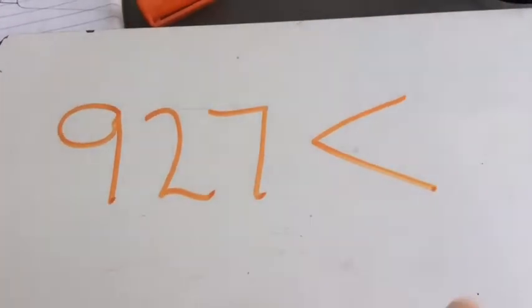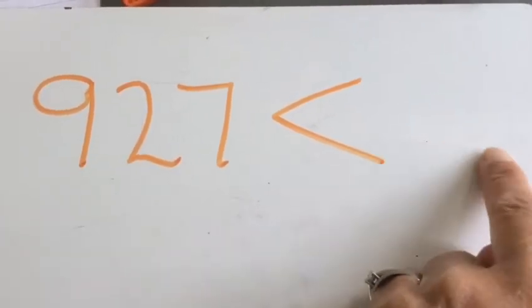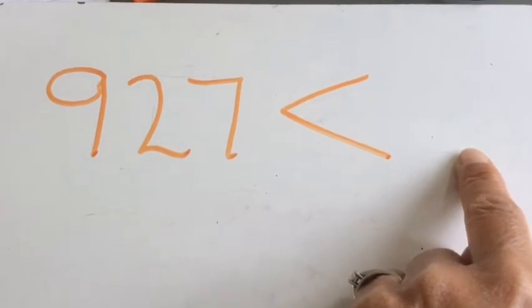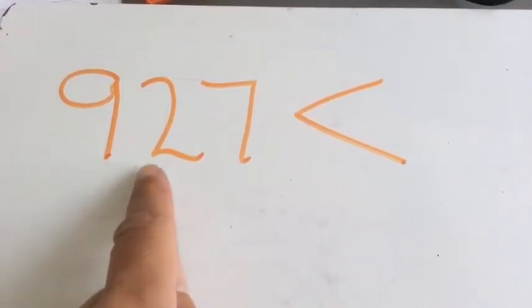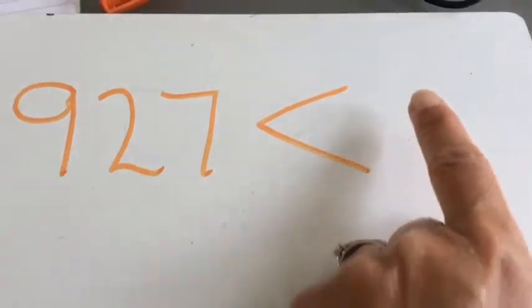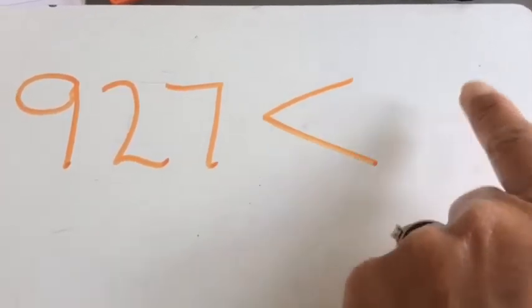Have a think now. What number could you put here? It's got to be greater than 927 hasn't it? Because the crocodile will eat the bigger number. Can you think of some numbers that could go here?